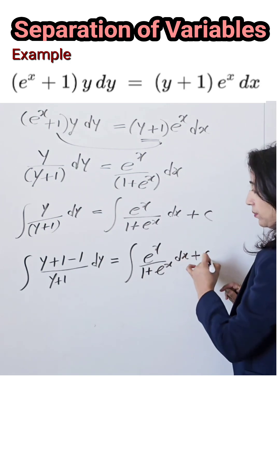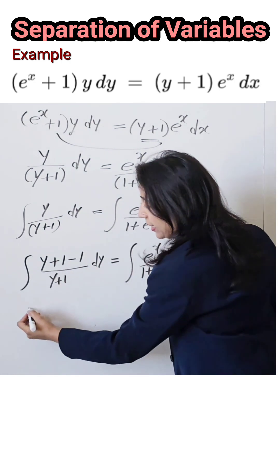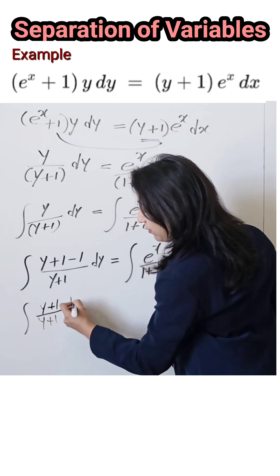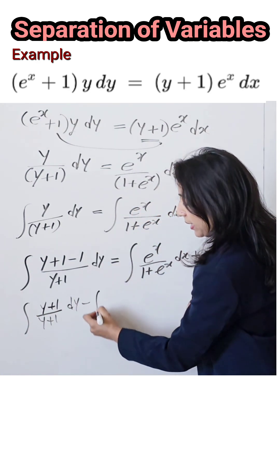Now here this (y+1)/(y+1) is here, so separate the term from denominator: (y+1) divided by (y+1) dy minus 1 upon the remaining term, 1 upon (y+1) dy.